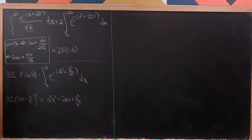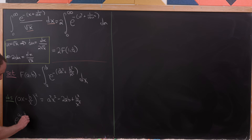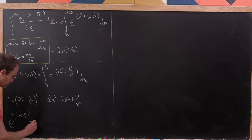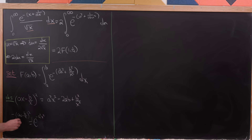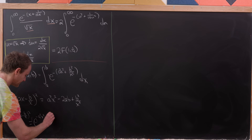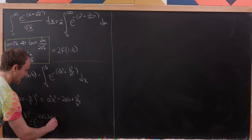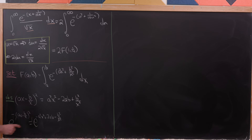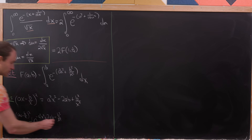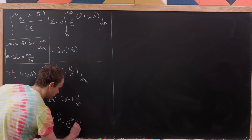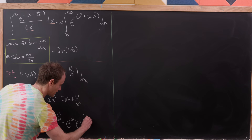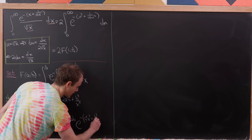This means we can write e to the minus (ax minus b/x) squared as e to the minus a squared x squared plus 2ab minus b squared over x squared. The e to the 2ab factor is essentially just a constant, so we can factor it out: e to the 2ab times e to the minus (a squared x squared plus b squared over x squared).